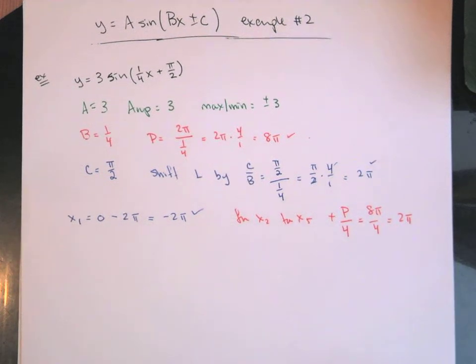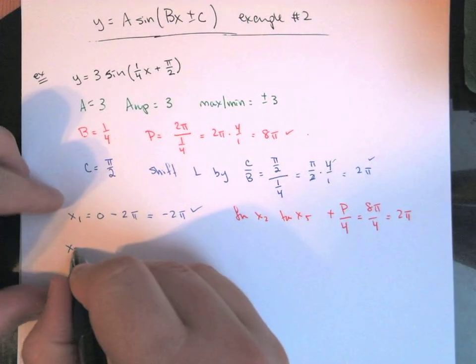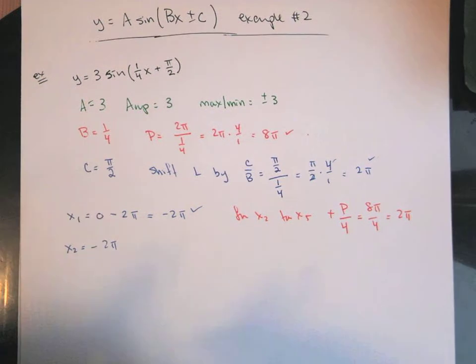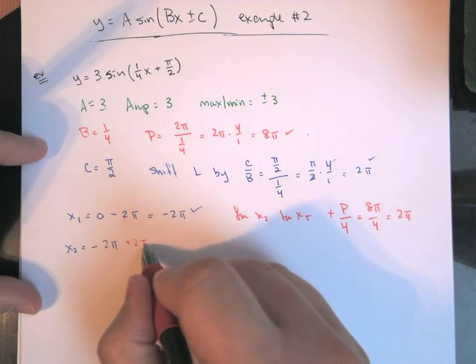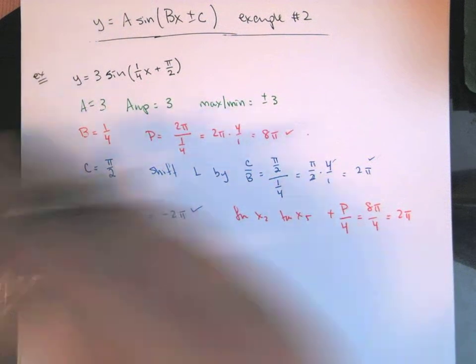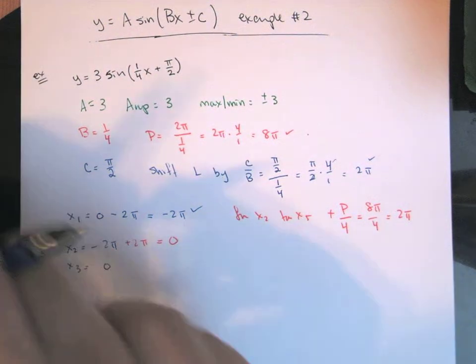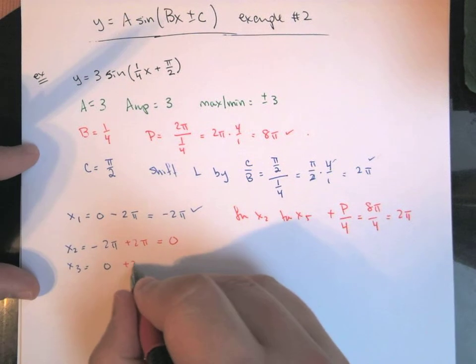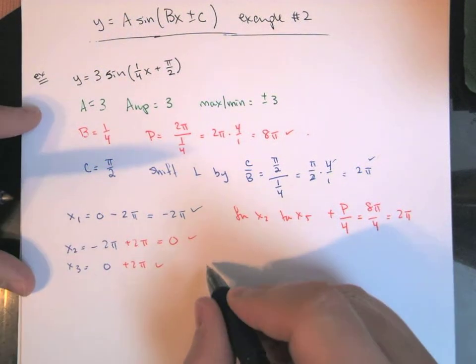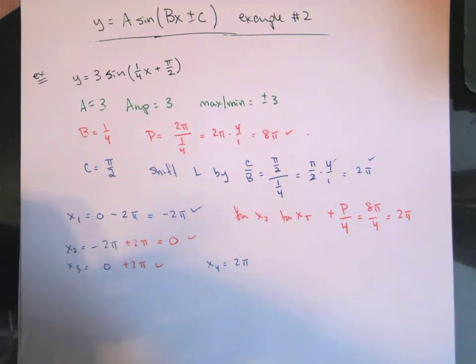So if we keep it going, so x1 is here, x2, so negative 2π, and then we're going to add the 2π to it. The math here is a little bit nice, so that's just going to be 0. x3, so 0 plus 2π, well that's 2π.